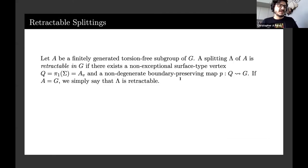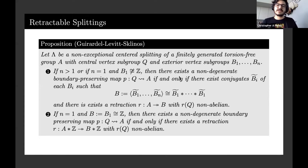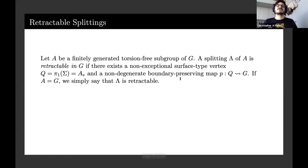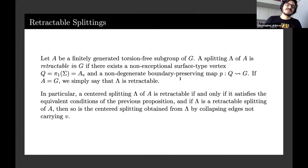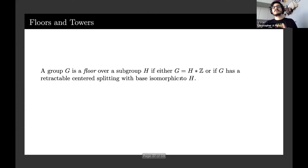This idea of being able to retract your splitting leads into the definition of what a retractable splitting is. The more important thing for our purposes is that a centered splitting is retractable if and only if it satisfies any of the equivalent conditions of the previous proposition. That means we can find that there's a boundary preserving map on the surface of our centered splitting that allows us to retract the group down onto the lower part, onto the lower group.